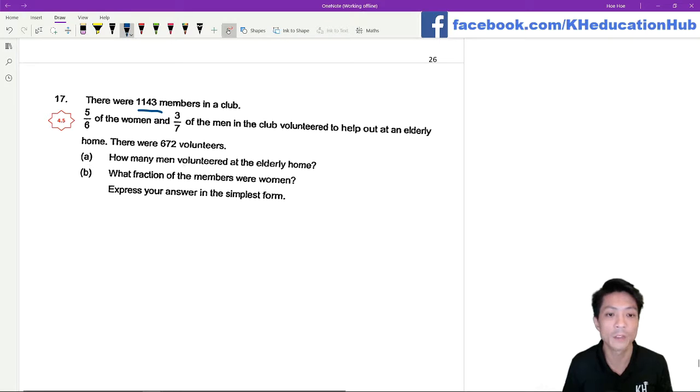There were 672 volunteers. Part A, how many men volunteered at the elderly home? Part B, what fraction of the members were women?